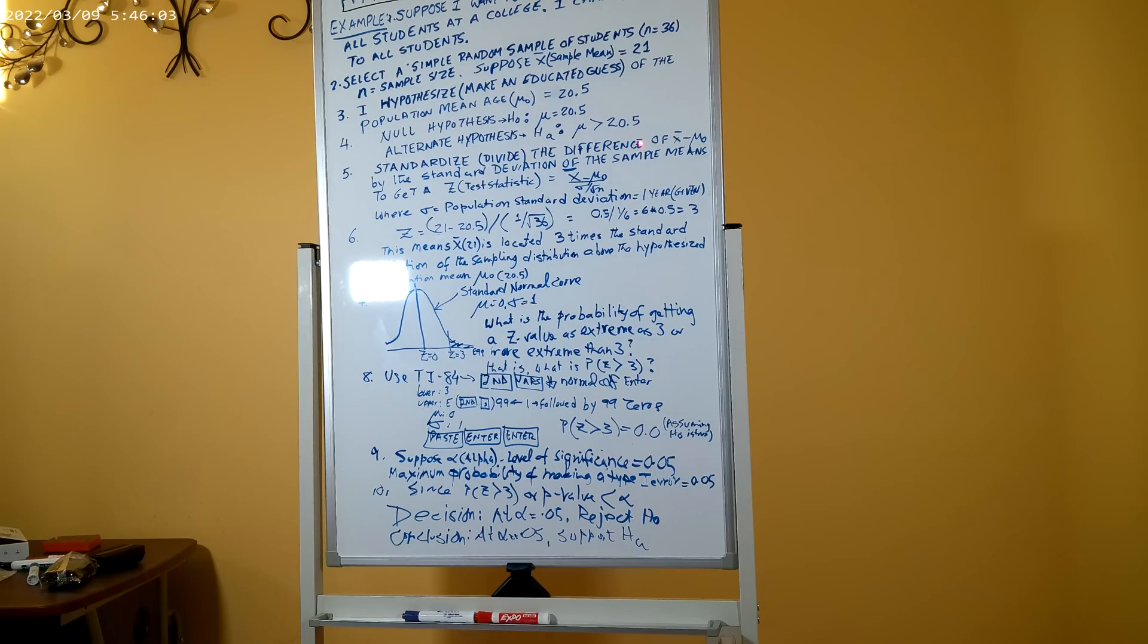Now we want to standardize, or divide, the difference of the sample mean x bar, which is 21, from the hypothesized population mean mu 20.5. We want to divide the difference of x bar minus mu 0 by the standard deviation of the sample means. The standard deviation of the sample means is given by sigma divided by square root of n, where sigma is the population standard deviation.